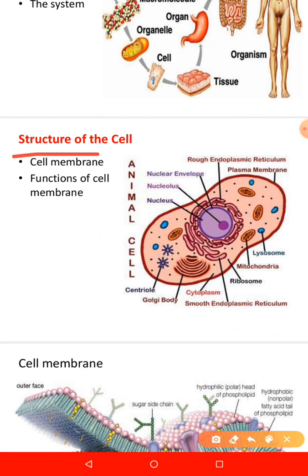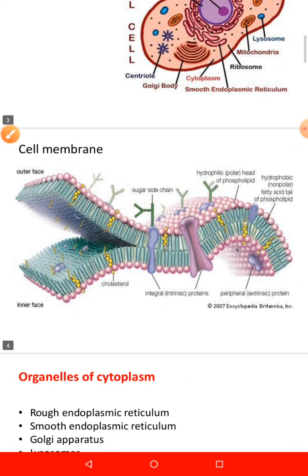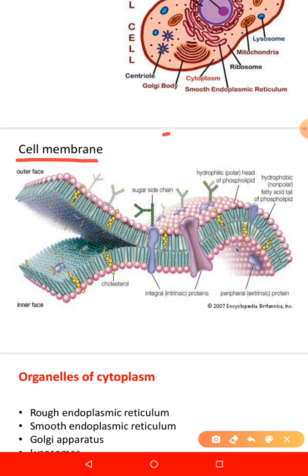A cell does not have a cell wall — it has a cell membrane. The cell membrane is a protective sheath which covers or envelops the cell body. Sometimes it's referred to as the plasma membrane or plasmalemma. This cell membrane is composed of about 55% protein, 40% lipids, and just 5% carbohydrates.